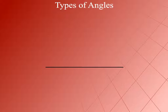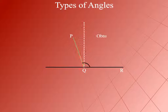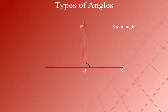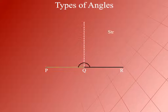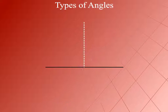Types of Angles. There are different types of angles depending on their measure. Acute angles measure between 0 and 90 degrees. Obtuse angles measure between 90 and 180 degrees. Right angles measure exactly 90 degrees. Straight angles measure exactly 180 degrees. Reflex angles measure between 180 and 360 degrees.